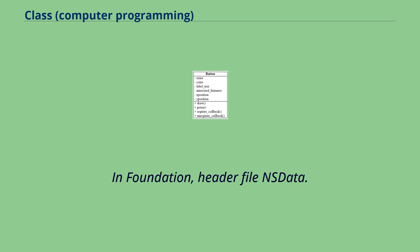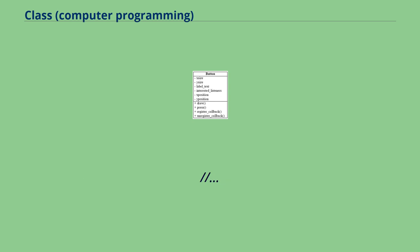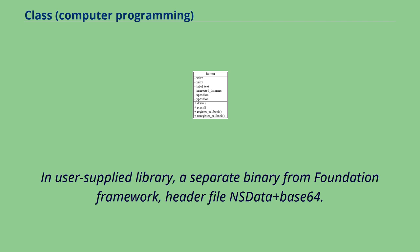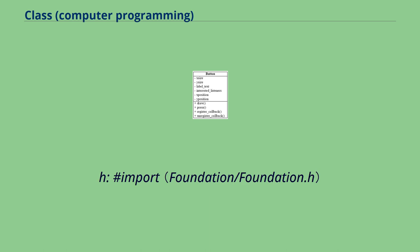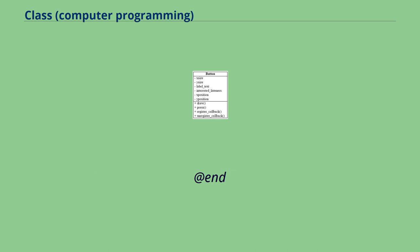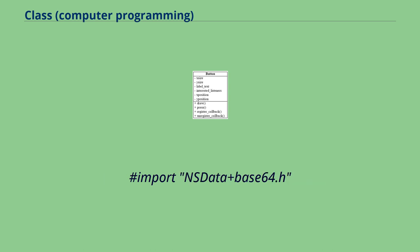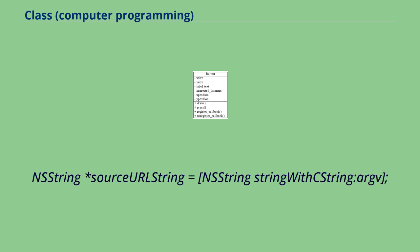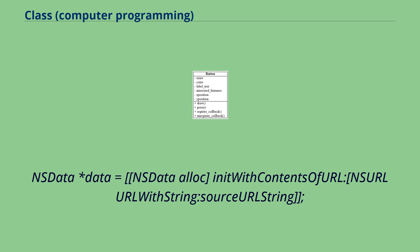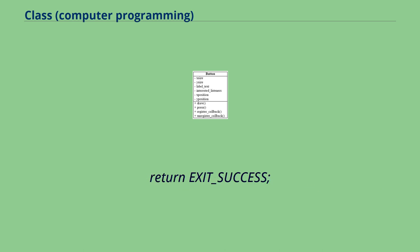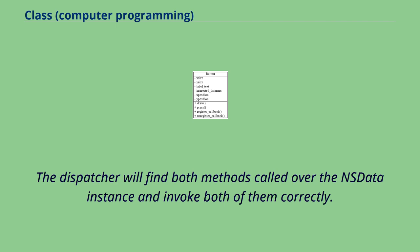For example, in Foundation's NSData.h header file, NSData is defined with NSObject and an initializer. In a separate user-supplied library, NSData+Base64.h extends NSData with a Base64 string initializer. In an app, another binary imports both headers and uses both the URL-based and Base64-based initializers on NSData instances. The dispatcher will find both methods called over the NSData instance and invoke both of them correctly.